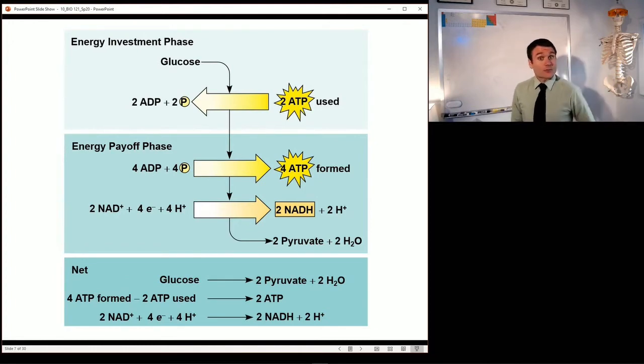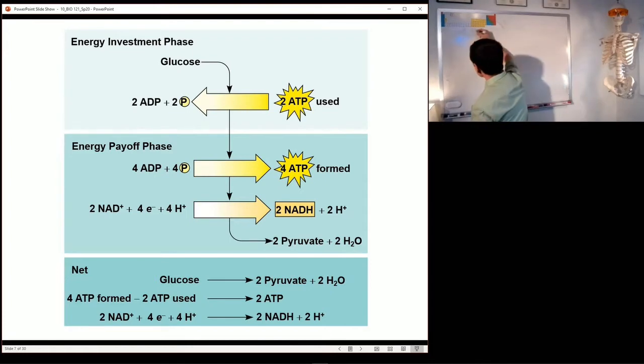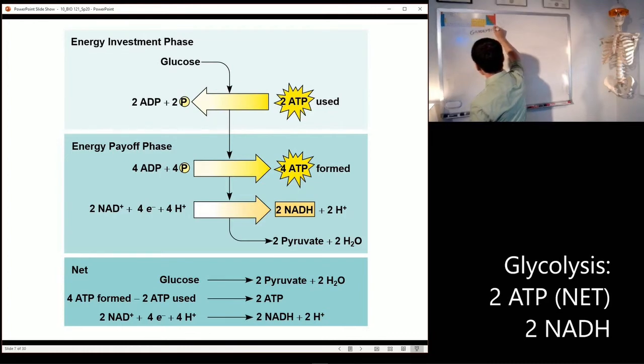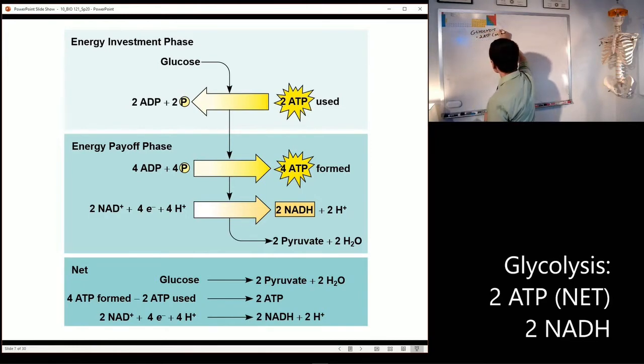But we also make 2 NADH, that other coenzyme. We're going to keep a running tally of all of the coenzymes that we make in this process so the counting works out at the end. So glycolysis, 2 ATP net and 2 NADH.